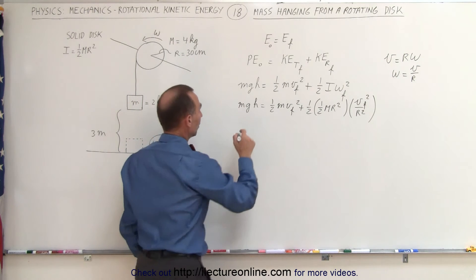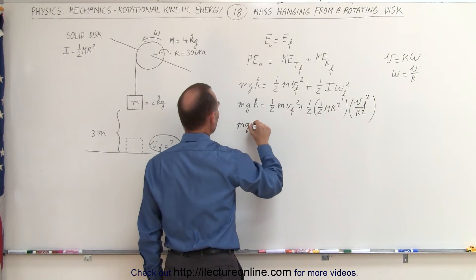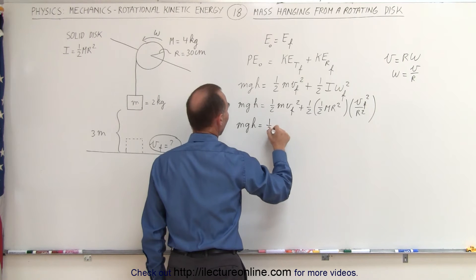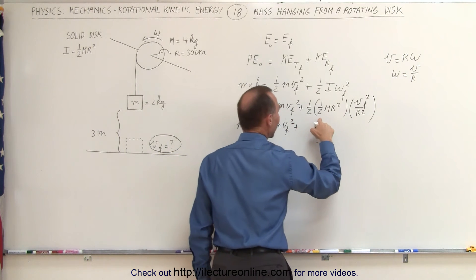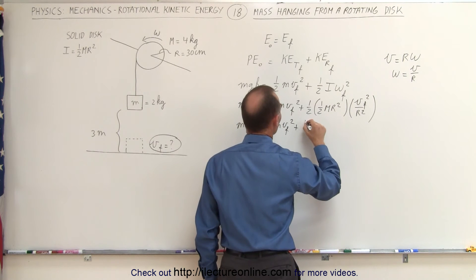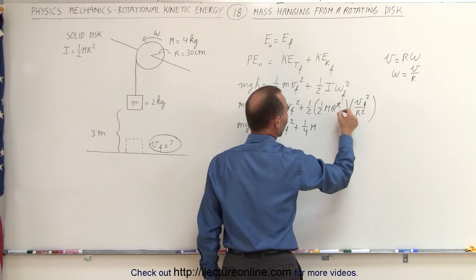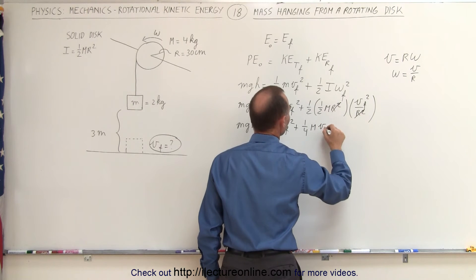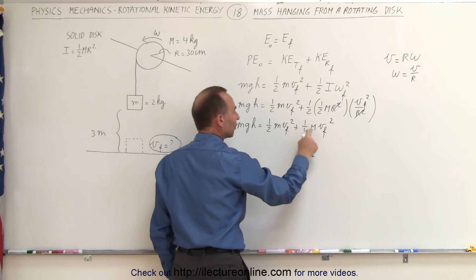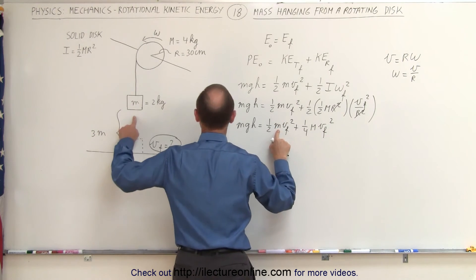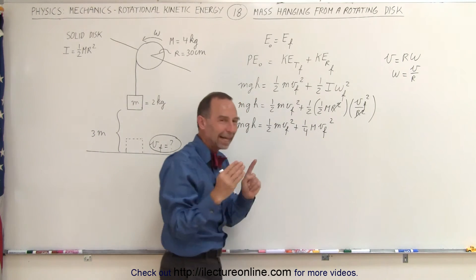Simplifying that a little bit more, we get mgh is equal to one-half mv final squared, plus one-half times a half, that would be one-quarter M, and the r's will cancel out, v final squared. We cannot combine these two terms because they have different masses. This is the mass of the object, and this is the mass of the disk, so they cannot be combined.